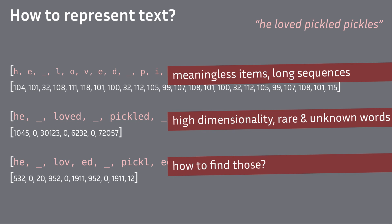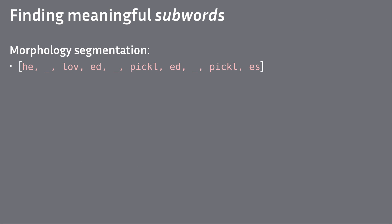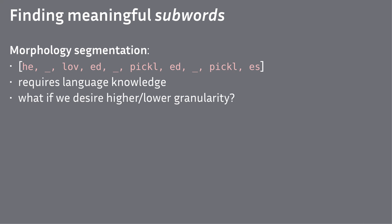How do we find this nice tokenization into meaningful units? We can start with morphology and decompose words into morphemes. But this has some problems: it requires specific language knowledge, such as of English, and it cannot be applied to arbitrary texts.